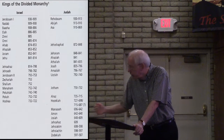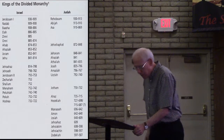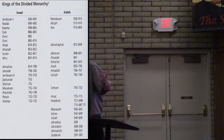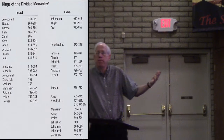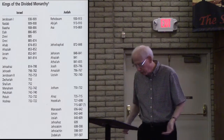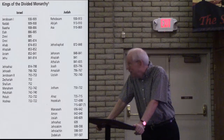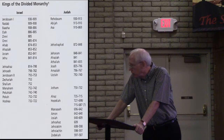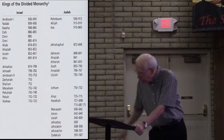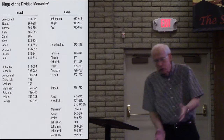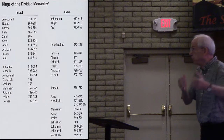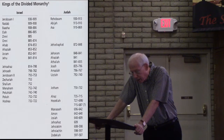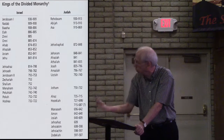This played out when Amaziah — feeling emboldened from defeating Edom — picked a fight with Jehoash the king of Israel. Jehoash defeated and captured Amaziah at Beth-shemesh, brought him to Jerusalem, ripped down sections of the wall, plundered the temple and palace, took hostages, and returned to Samaria.